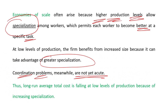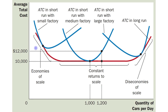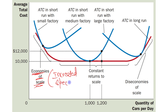Thus, long run average total cost is falling at low levels of production because of increasing specialization. The long run average total cost curve at low levels of production is continuously declining because of increased specialization among workers — there are economies of scale.